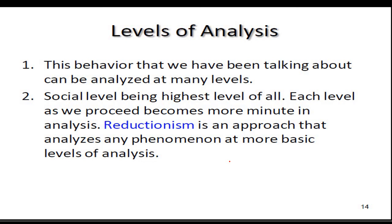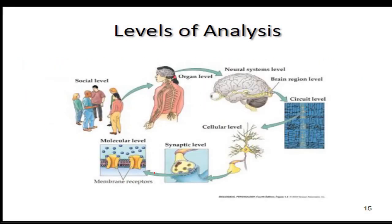Level of analysis. There are different perspectives in analyzing physiological psychology. One level of analysis or approach is called reductionism — it analyzes any phenomenon at a more basic level of analysis. From general knowledge or information, it is reduced to minute details in order to properly analyze a phenomenon. For example, at the social level, you observe that Pedro does not get along with his group or behaves differently — perhaps more aggressive or very passive.